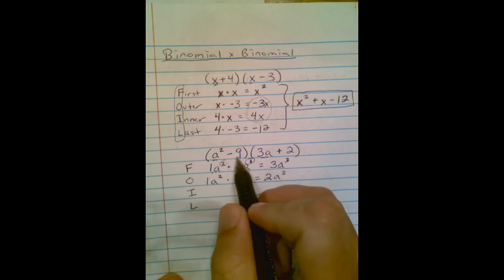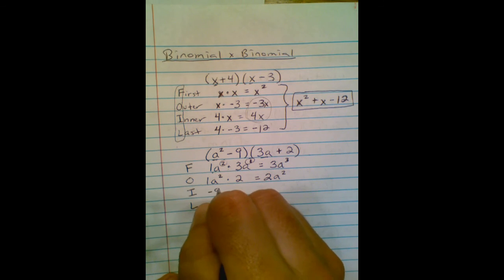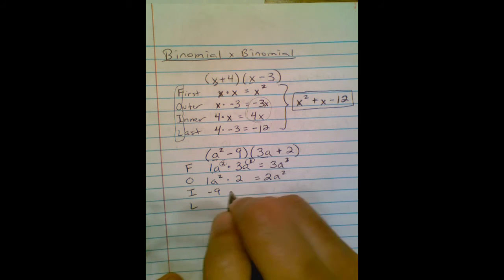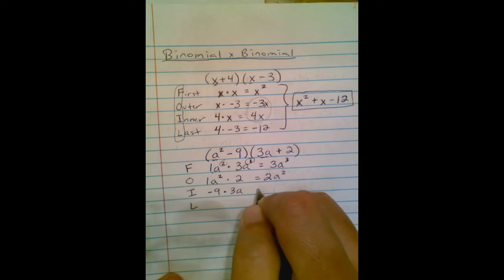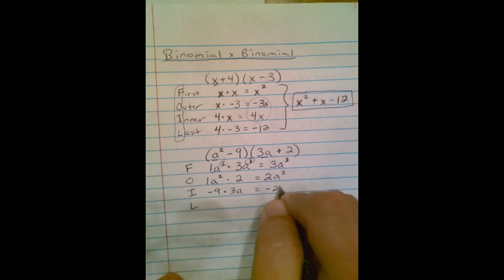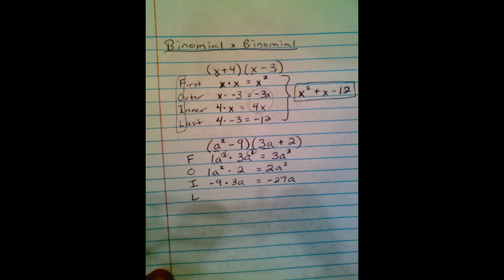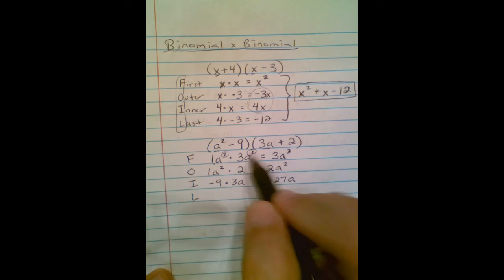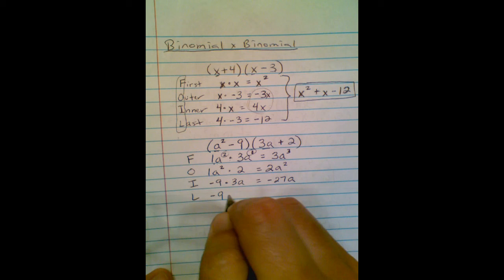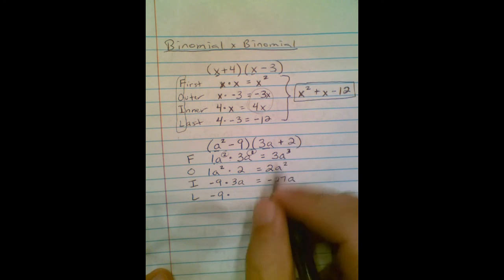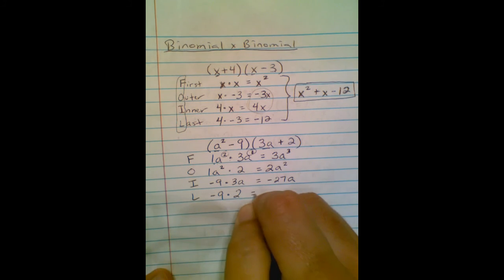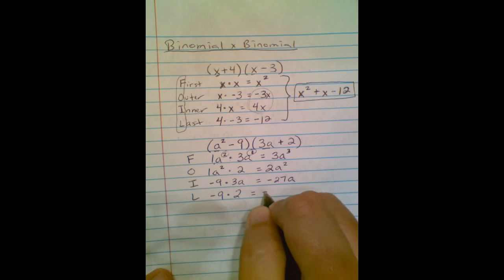The inner terms. I'm going to take this negative with the 9. So I got negative 9 times 3a. Negative 9 times 3 is negative 27. There's nothing to combine that a with, so it stays negative 27a. And then my last terms. I take the negative 9 times the last term, which is positive 2. Negative 9 times positive 2 is negative 18.